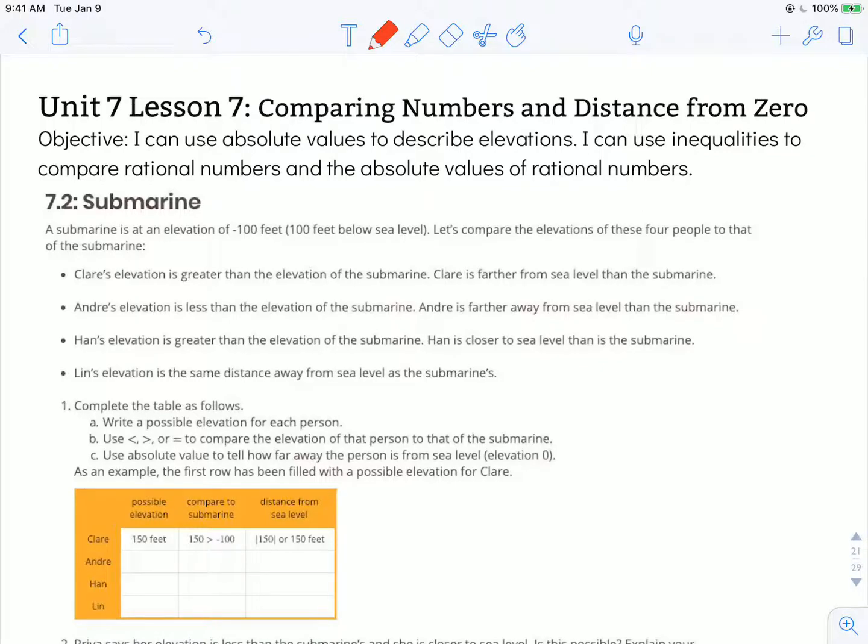Hi, this is Mrs. Nelson. We're looking at Illustrative Math for 6th grade. This is Unit 7 Lesson 7, Comparing Numbers and Distance from Zero. The objective states I can use absolute values to describe elevations. I can use inequalities to compare rational numbers and the absolute values of rational numbers. We're looking at Activity 7.2, Submarine.